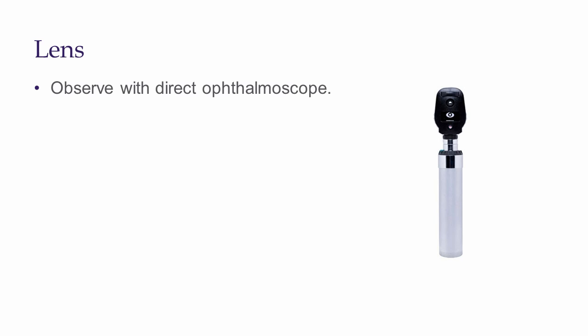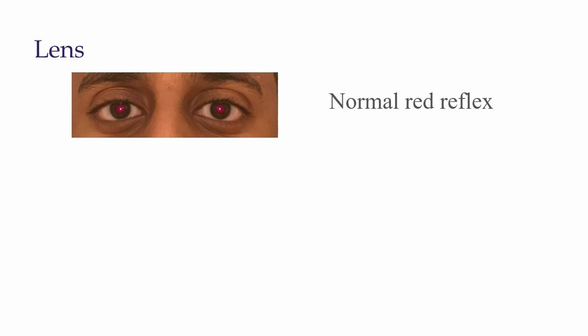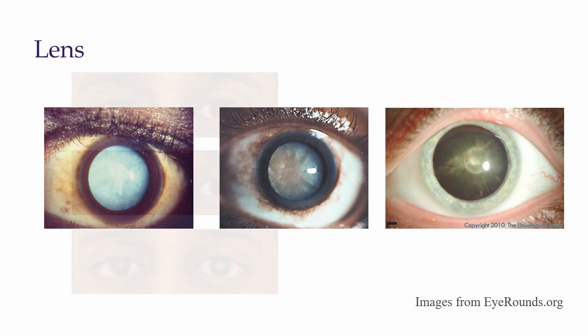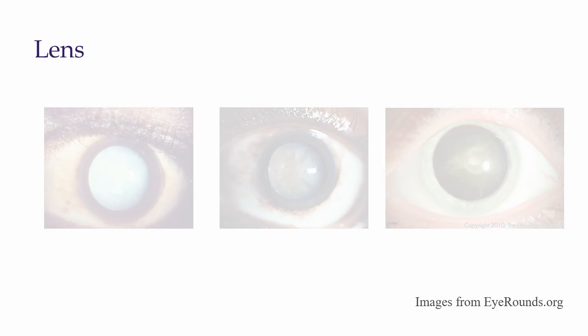A direct ophthalmoscope is very helpful in identifying lens opacities. Hold it approximately one to two feet away from the patient and look at the red reflex through the pupil. Dulled or asymmetric red reflexes can be caused by the presence of a cataract. Some cataracts look milky white, others look brownish, and others may look like a plaque.